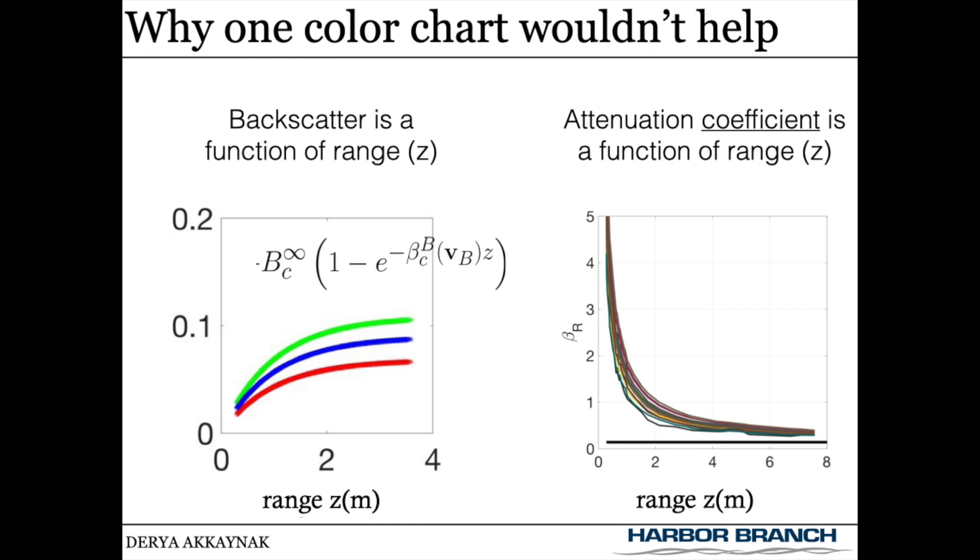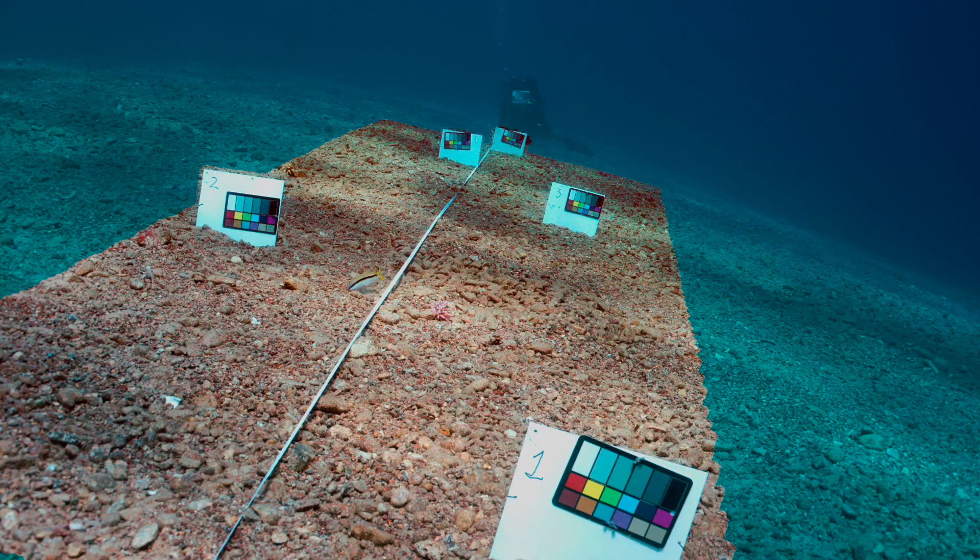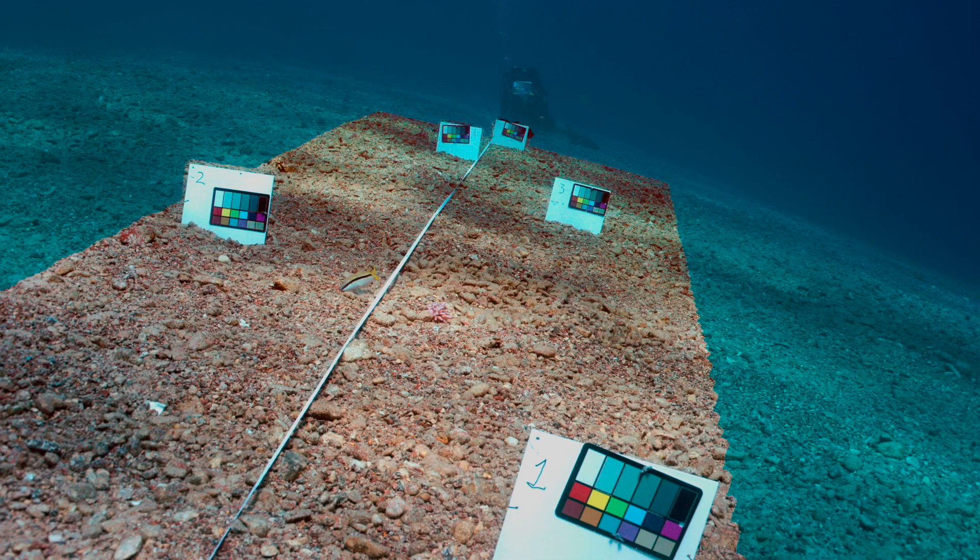Remember how I said one color chart wouldn't help? Backscatter changes with distance, and the attenuation coefficient changes with distance. Unless everything in the scene is at the same range, you would need a minimum of two color charts at two different distances. The attenuation coefficient was assumed to be constant for the last 35 years. That's how we restore colors when we have color charts in the scene.